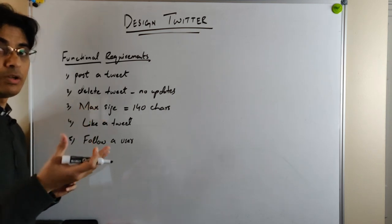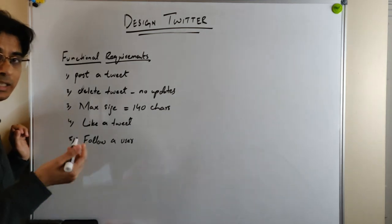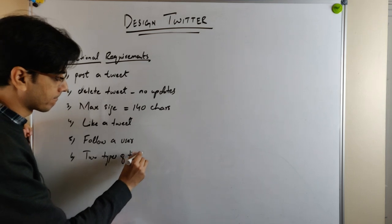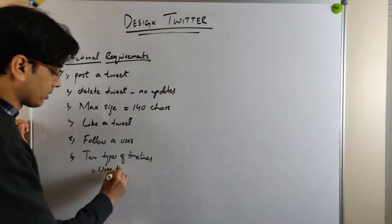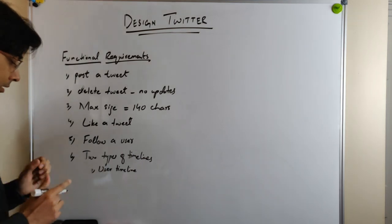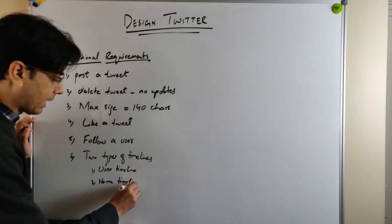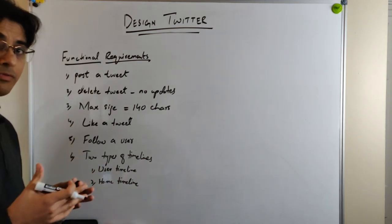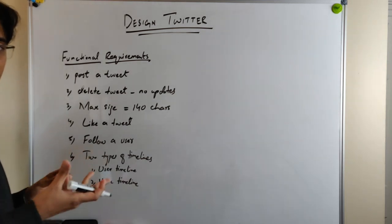The sixth requirement is there are two types of timelines. The first type is the user timeline, which consists of all the tweets a user has posted. The second type is the home timeline, in which a user can see all the tweets from all the other users that he is following. The seventh functional requirement is the user should be able to search tweets based on keywords.